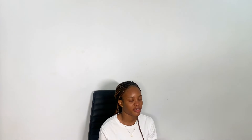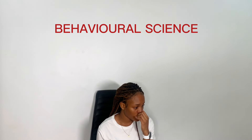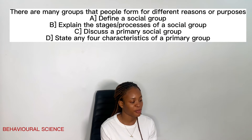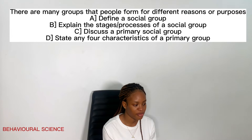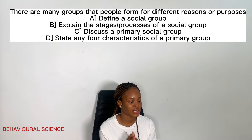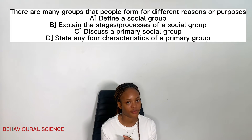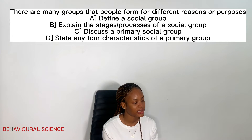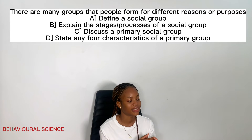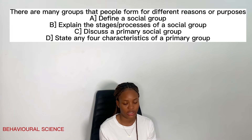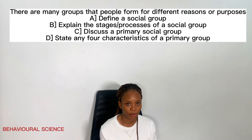The next one is behavioral science — also answer all questions. Question 1: there are many groups that people form for different reasons or purposes. A: define a social group. B: explain the stages and processes of a social group. C: discuss a primary social group. D: state any four characteristics of a primary group.